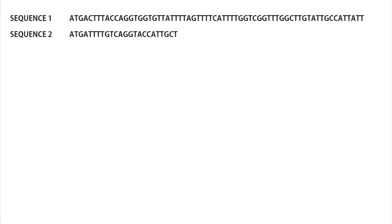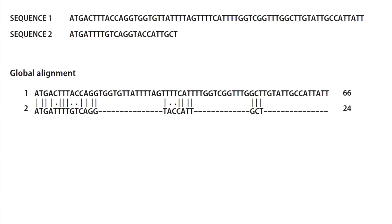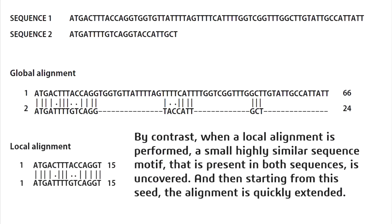For a basic introduction, global alignment looks for comparison over the entire range of two sequences involved. This method does not always work very well, because in many cases only a portion of the two sequences can be aligned. By contrast, when a local alignment is performed, a small highly similar sequence motif that is present in both sequences is uncovered. Then, starting from this seed, the alignment is quickly extended.